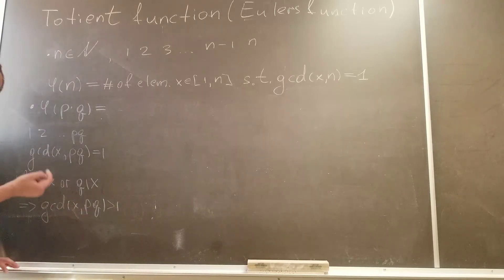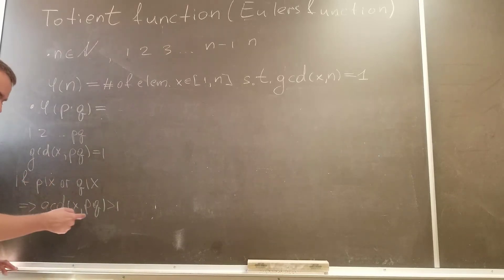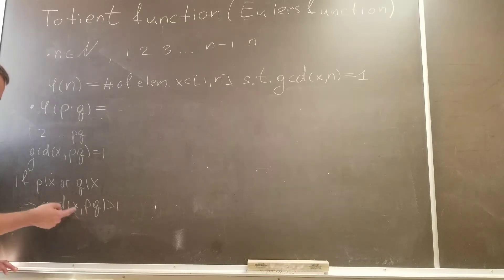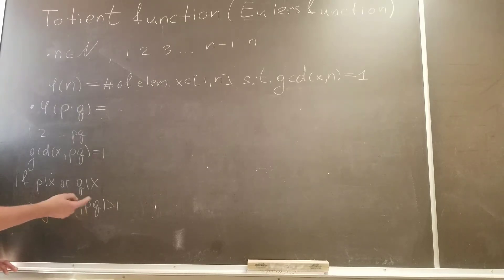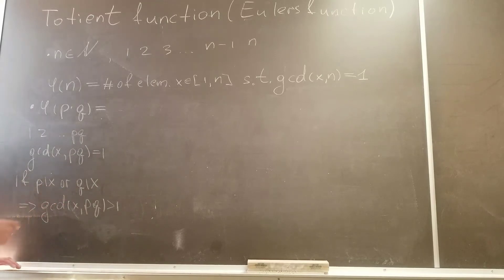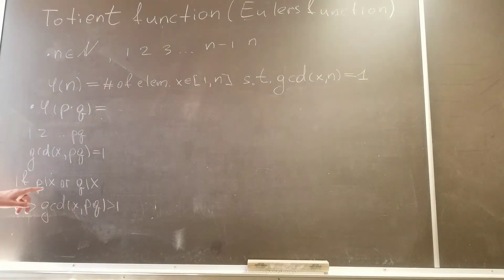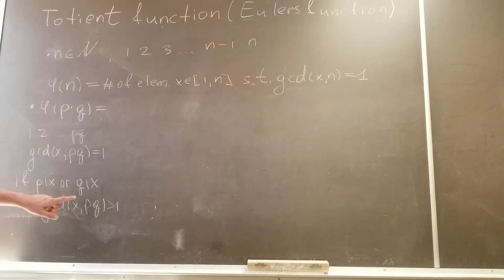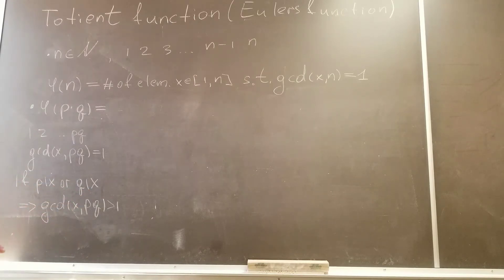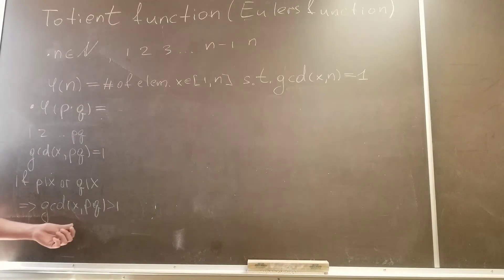Why do we take non-trivial factors? Because if you take p times q itself, the gcd is obviously going to be bigger than 1. So we just need non-trivial factors. We know: if x is divisible by p or x is divisible by q, gcd is bigger than 1. For all other cases, our gcd is going to be equal to 1.